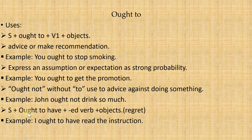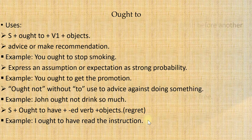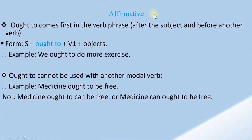To express regret, use: subject + ought to have + past participle (verb 3) + object. Example: 'I ought to have read the instructions.' For the affirmative form, 'ought to' comes first in the verb phrase, after the subject and before another verb form. Structure: subject + ought to + verb 1 + object.